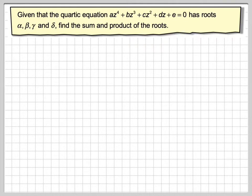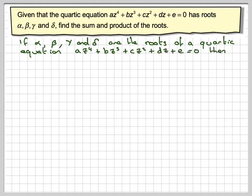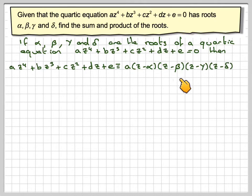So this is a little bit tedious, but here we go. If alpha, beta, gamma and delta are roots of the quartic az⁴ + bz³ + cz² + dz + e, then that will be equivalent to a times (z minus alpha)(z minus beta)(z minus gamma)(z minus delta). What we've got to do now is multiply these out.